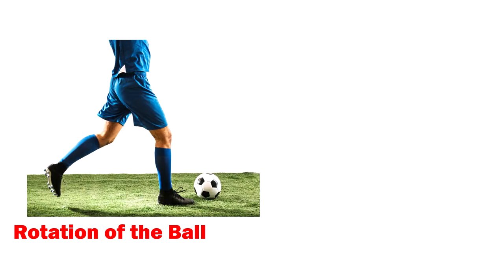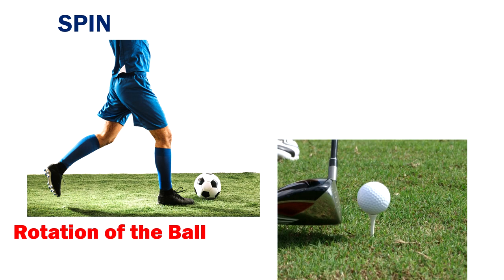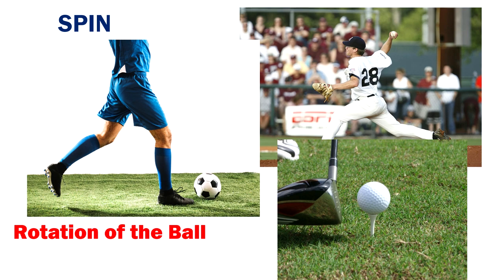The rotation of the ball is made possible by giving a spin on the ball when it is being hit, thrown, or kicked. By giving a spin on the ball, it starts to rotate as it moves forward, causing it to curve because of the displacement of the air.